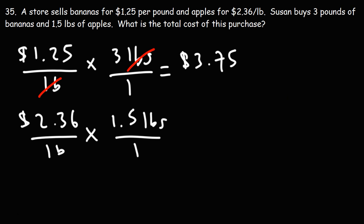Now, let's find the cost for the apples. We're going to multiply 2.36 by 1.5. 6 times 5 is 30, so we'll write the 0, carry the 3. 3 times 5 is 15, plus 3, that's 18. We'll write the 8, carry over the 1. 2 times 5 is 10, plus 1, that's 11. Let me use a different color now. For the next level, we're going to add a 0. 1 times 6 is 6. 1 times 3 is 3. 1 times 2 is 2.